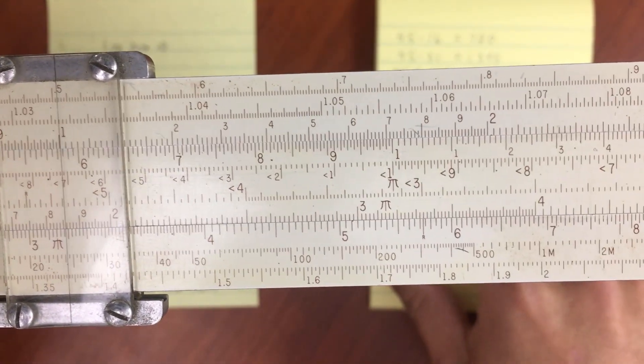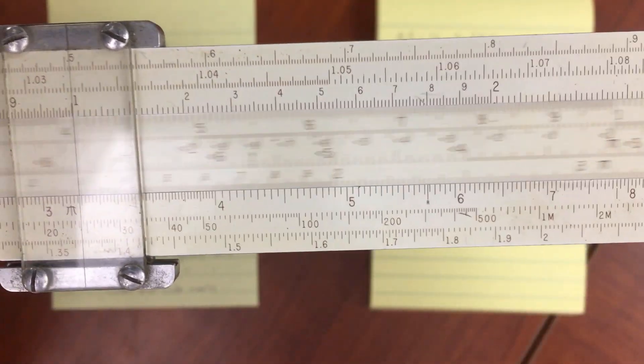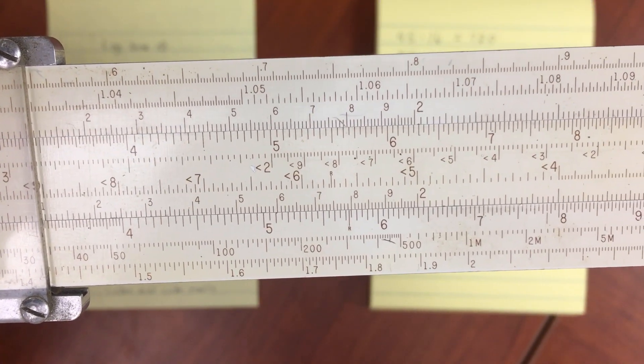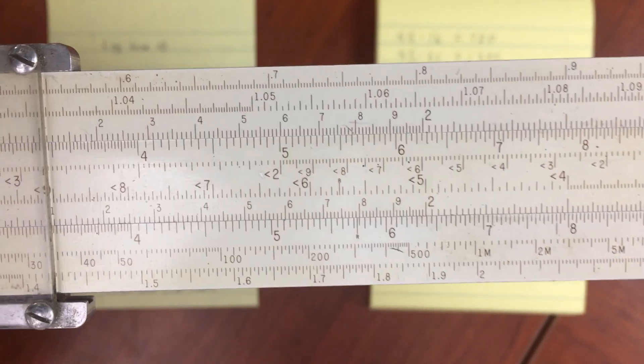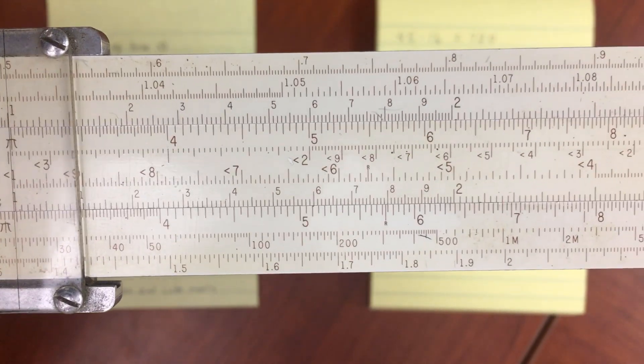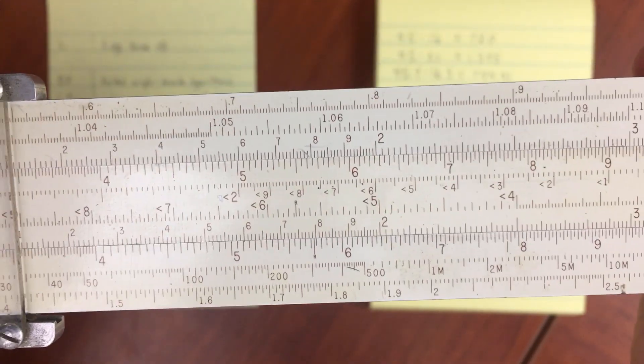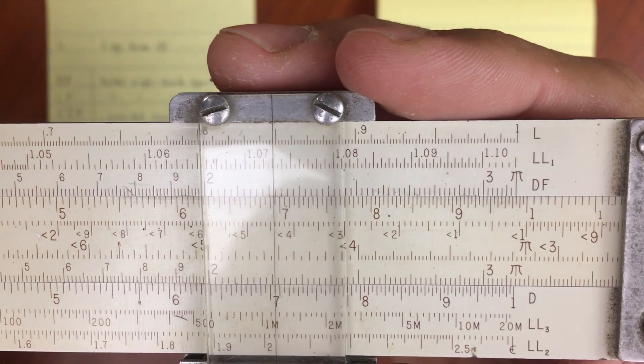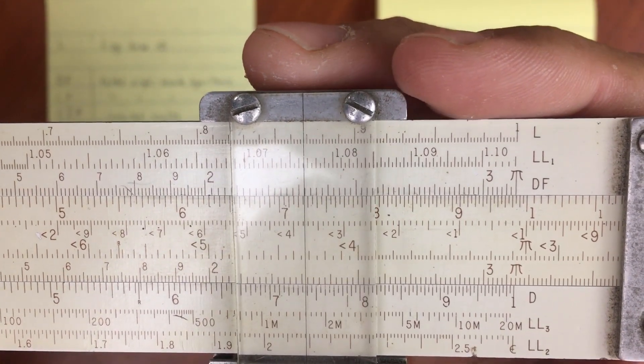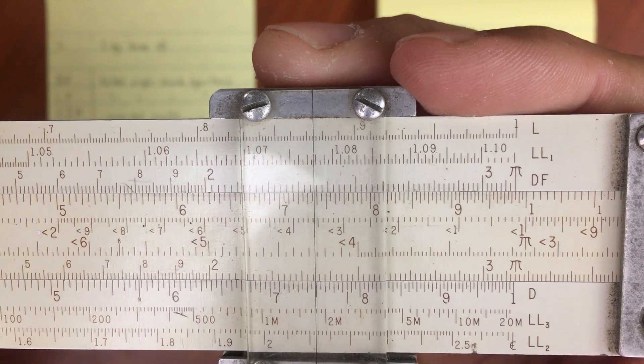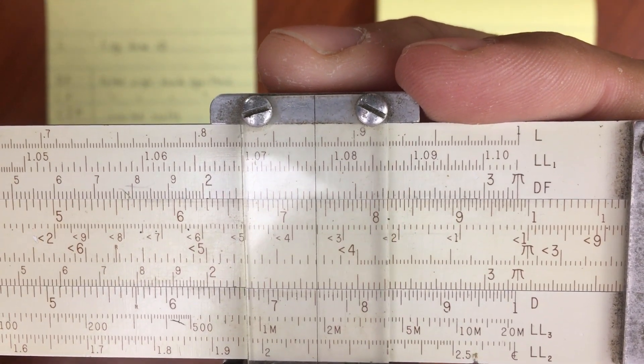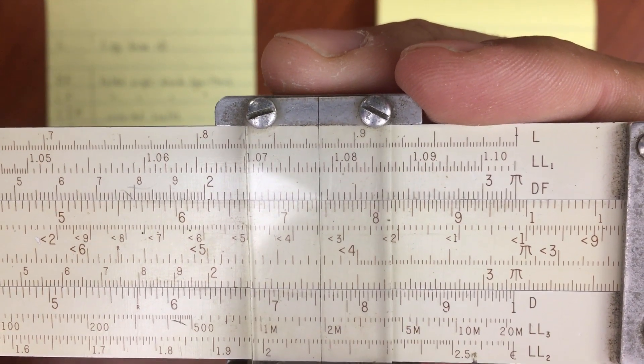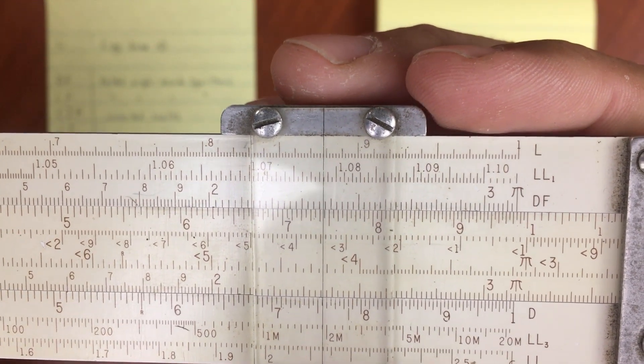And then our last number is going to be 23.7. So move our 1 over there. To our current hairline. Sorry, my slide rule is just a little bit stiff. And read off our final number is 23.7. So move this over here. We've got 1, 2, 3.0 right about there. 23.7.